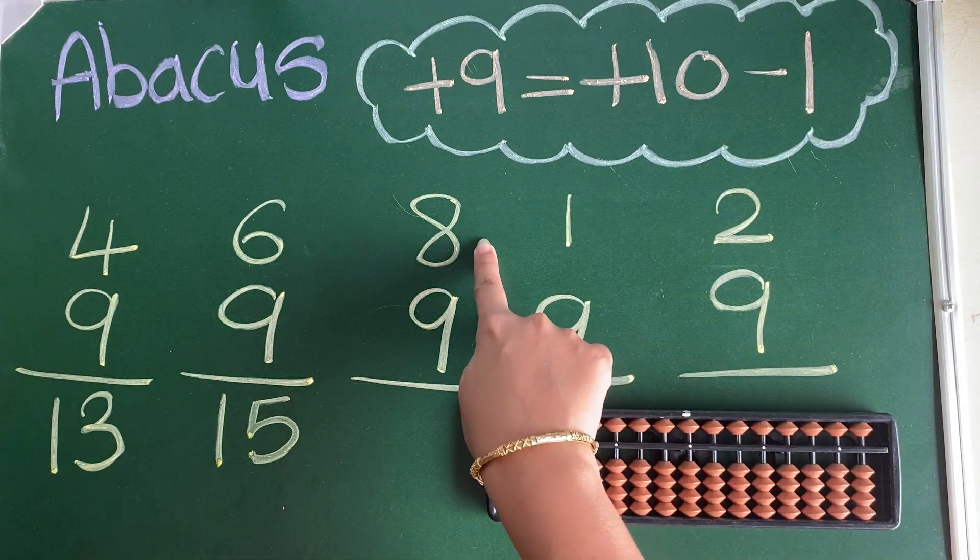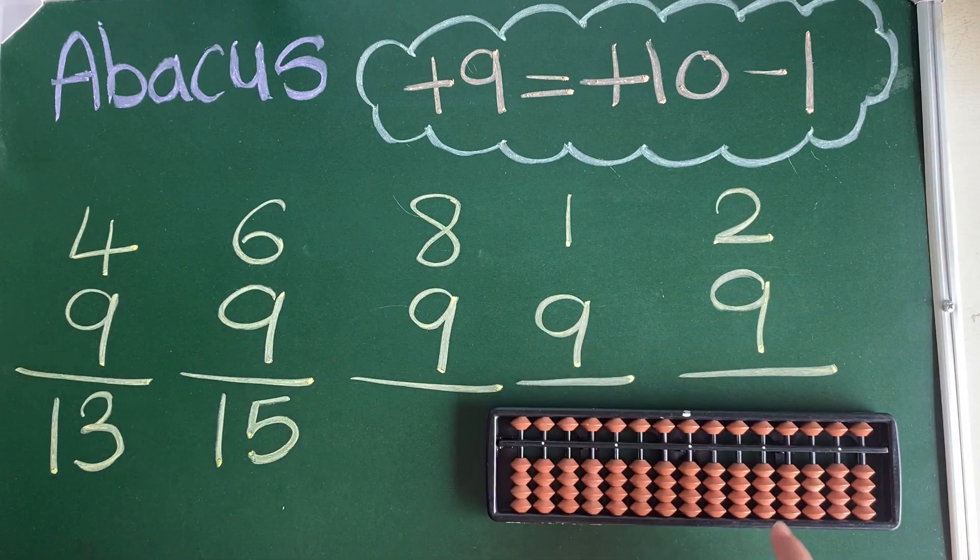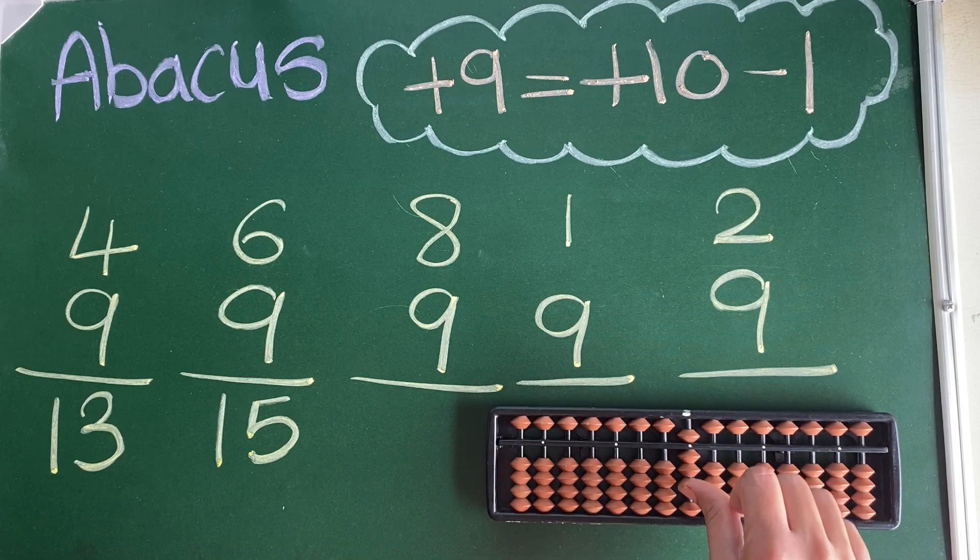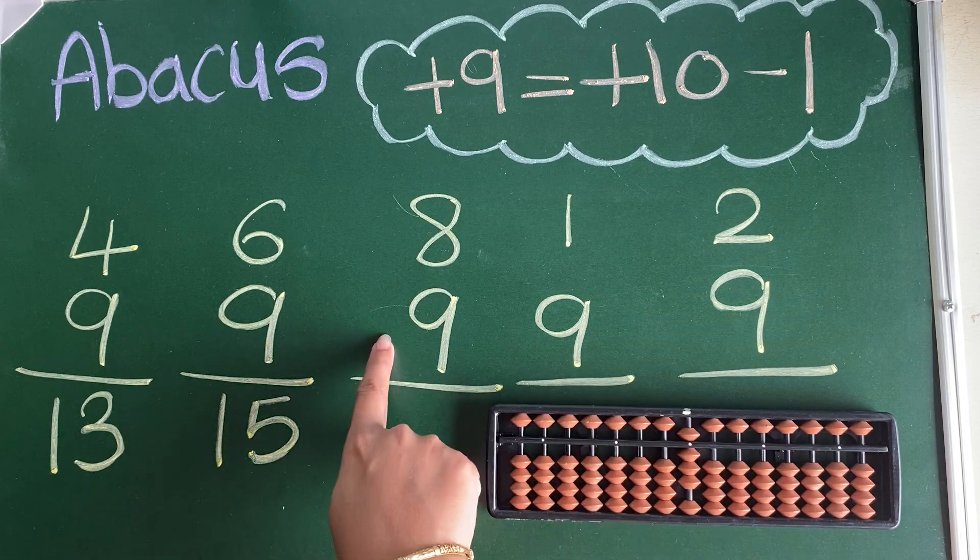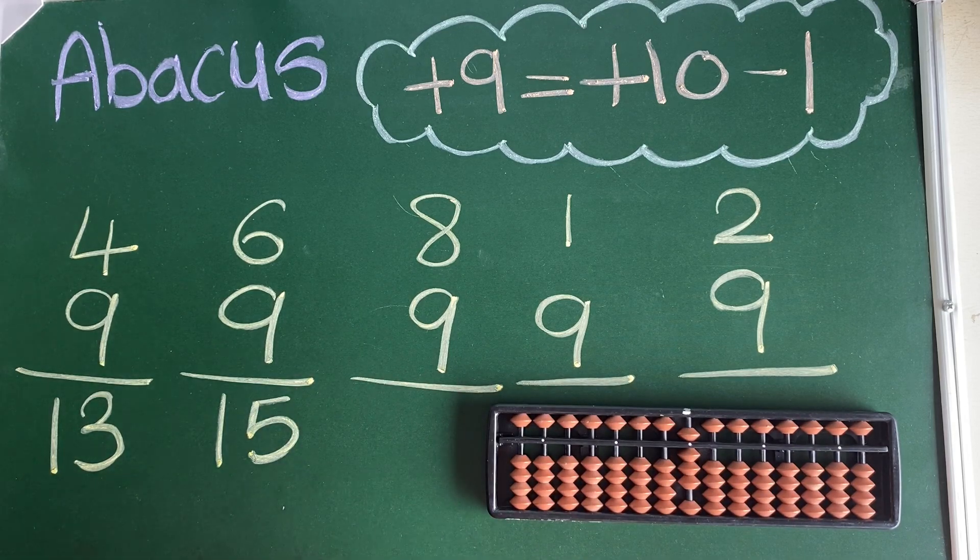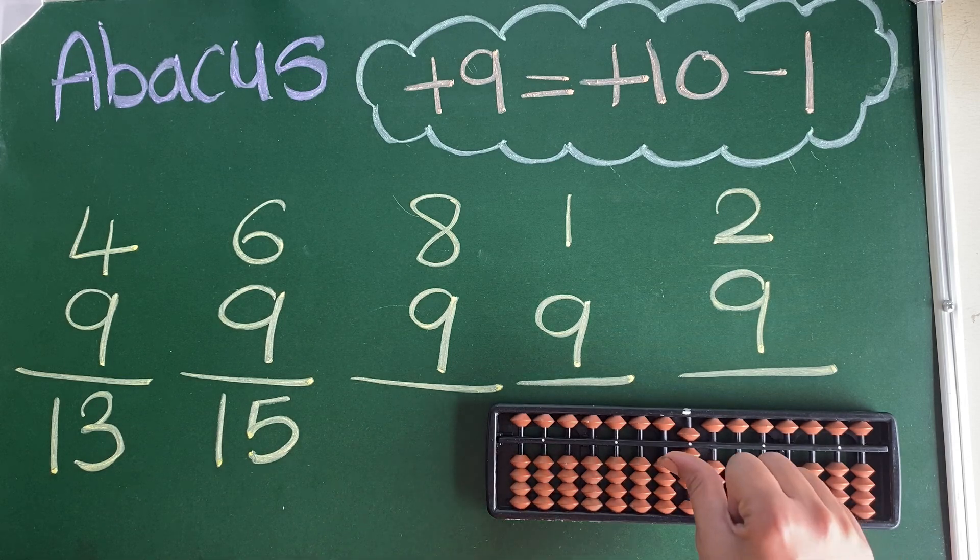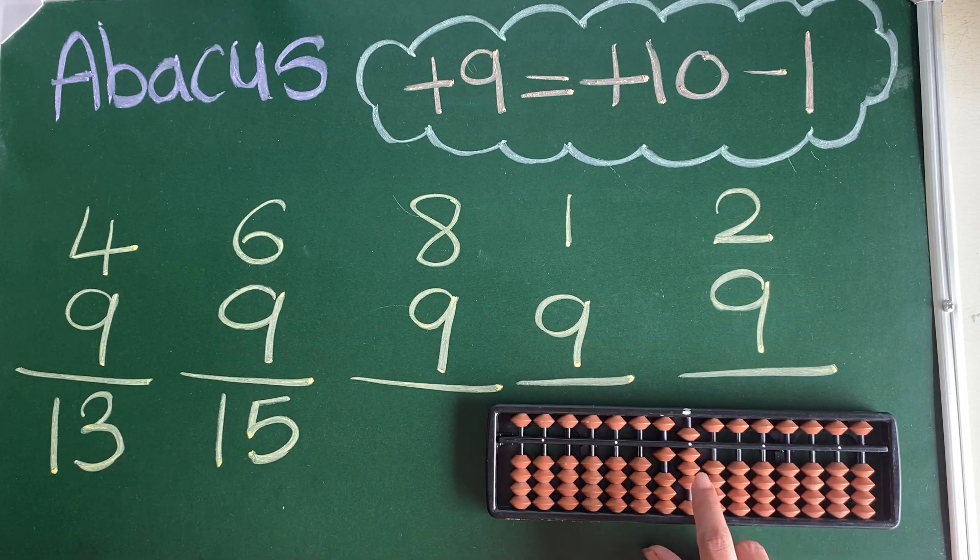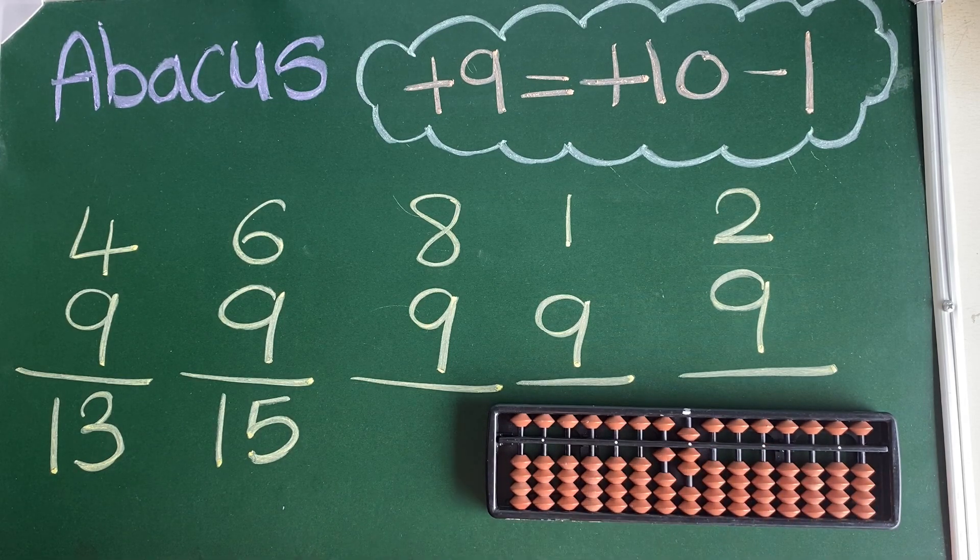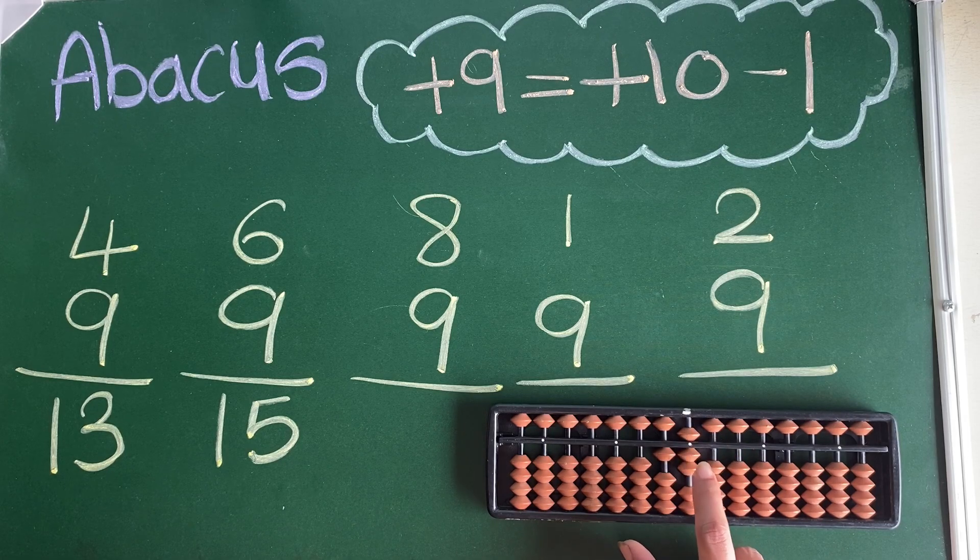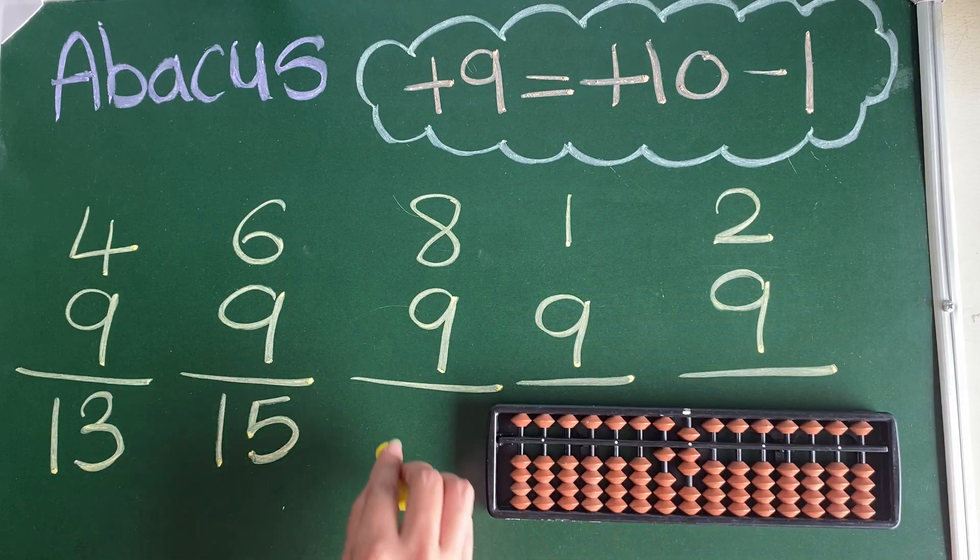Next sum: 8. What is the first number? 8, 5, 6, 7, 8. Plus 9. For plus 9, what are we going to do? Plus 10 minus 1. Answer is 10, 15, 16, 17. Answer is 17.